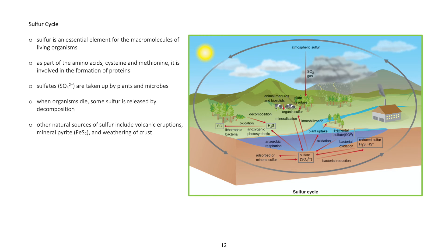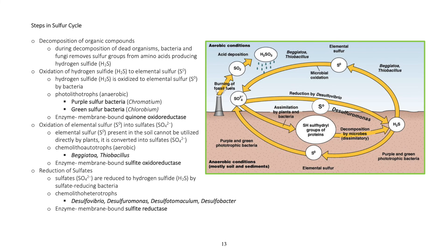Sulfates are taken up by plants and microbes. When organisms die, some sulfur is released by decomposition. Other natural sources of sulfur include volcanic eruptions, mineral pyrite, and weathering of crust.